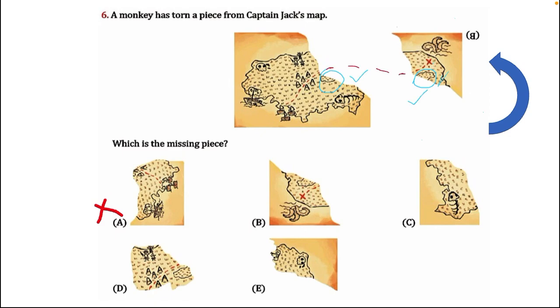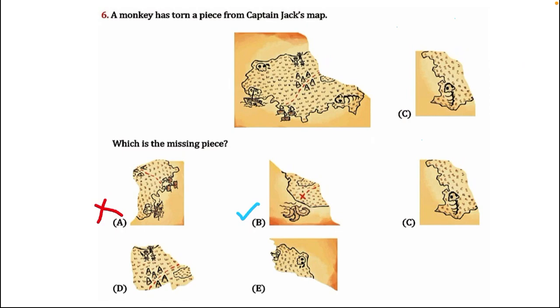If we join the dotted line, it is also correct. Then option B is correct. Still, we have to check other options for our own clarity whether our option B is correct or not.